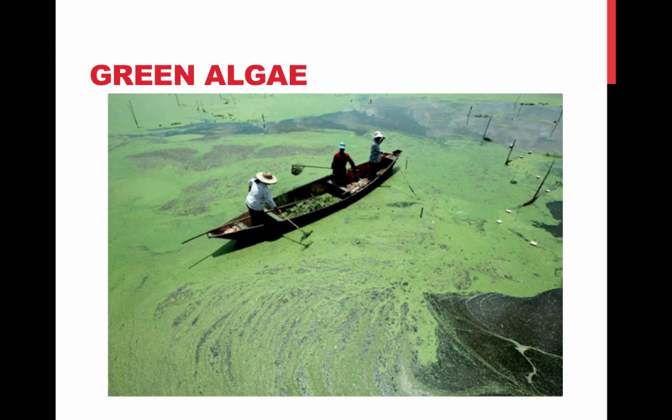Green algae are named for their grass-green chloroplasts, and plants are descended from green algae. The two main groups are chlorophytes and charophyceans.